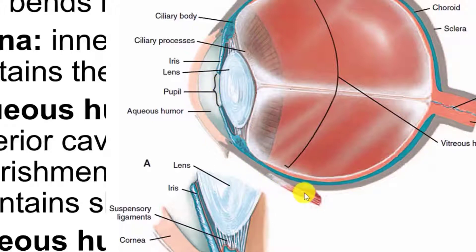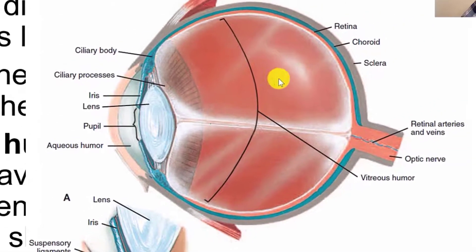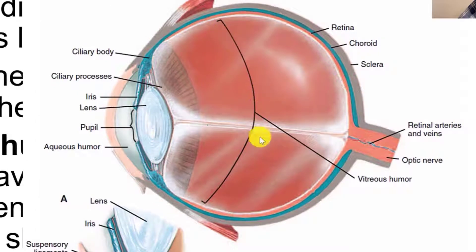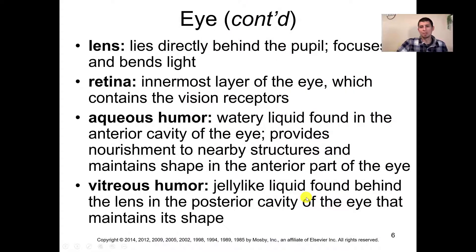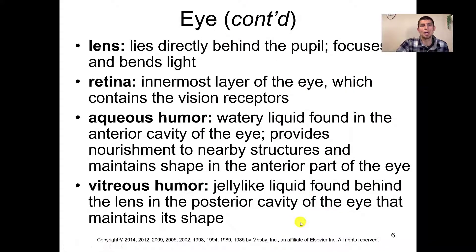The vitreous humor is a jelly-like substance that makes up the majority of the eyeball. It's found behind the lens in the posterior cavity of the eye, and it also helps maintain the overall shape of the eye.